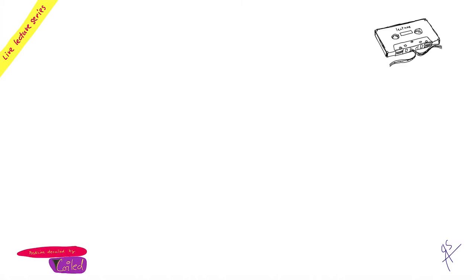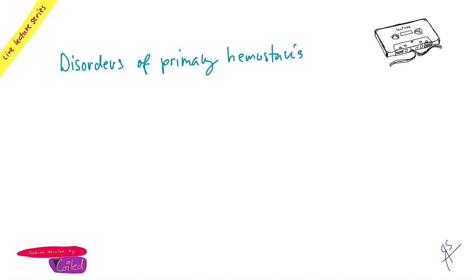If there is something with the thrombocytes or with the vessel wall, it looks the same. What pops to your mind? Superficial bleeding. It's the superficial bleeding — so, petechiae. What is a bigger petechia? What do we call that? Ecchymosis. Purpura. And purpura — what is purpura? It's lots of petechiae or ecchymoses together.